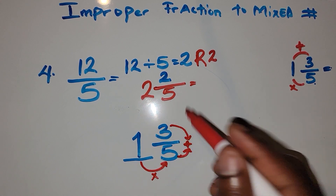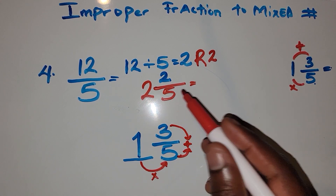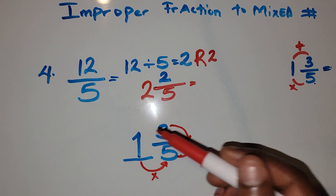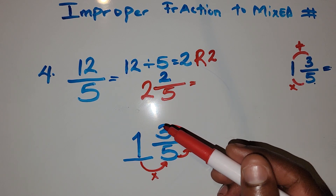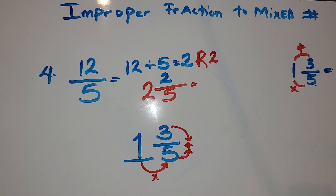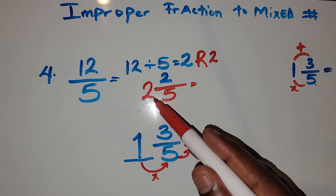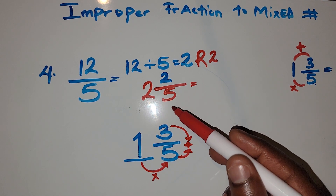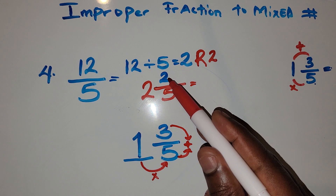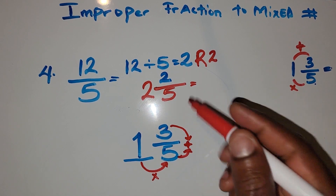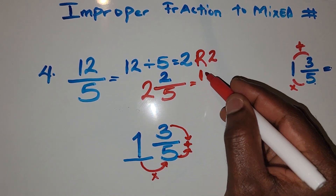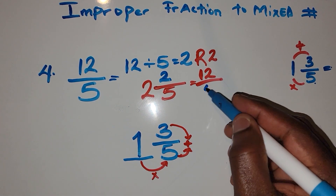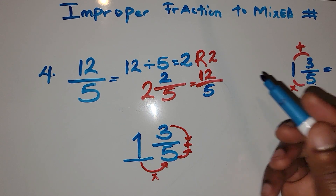To convert back to an improper fraction, you multiply 2 by 5, which gives you 10, plus 2, which gives you 12. Then you bring the denominator 5 down, and the denominator remains constant. So the answer is 12 over 5.